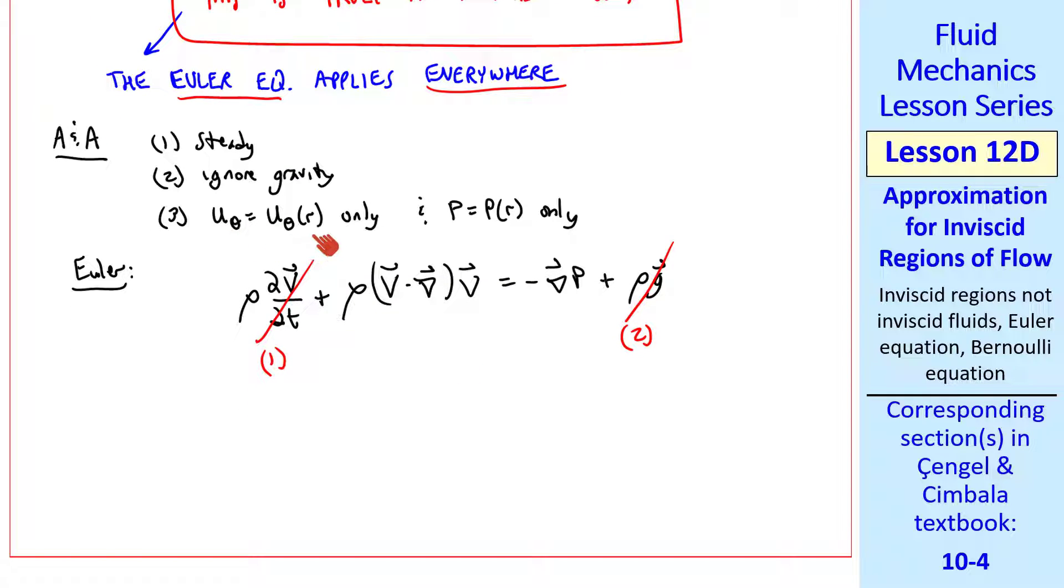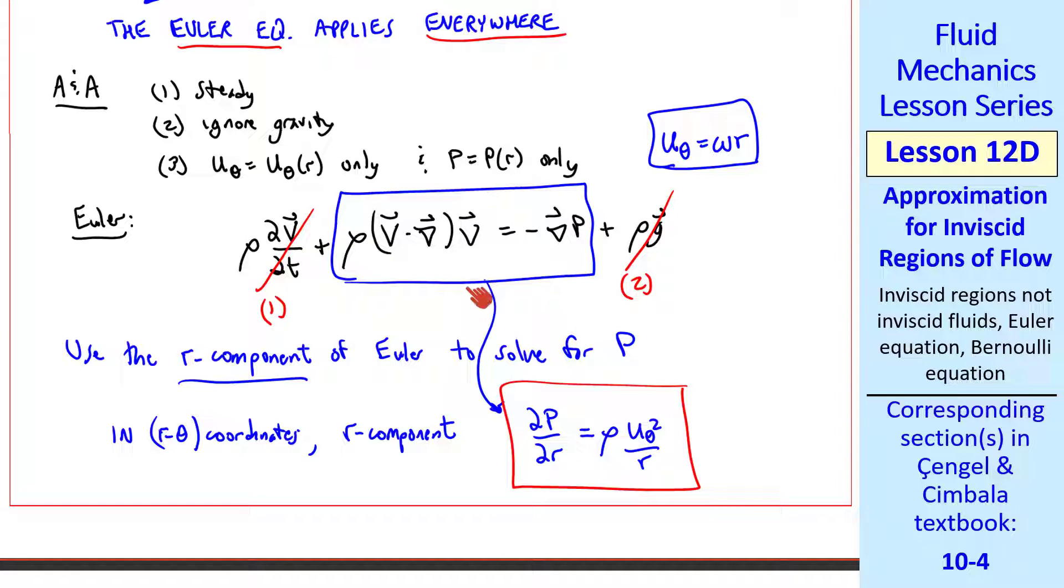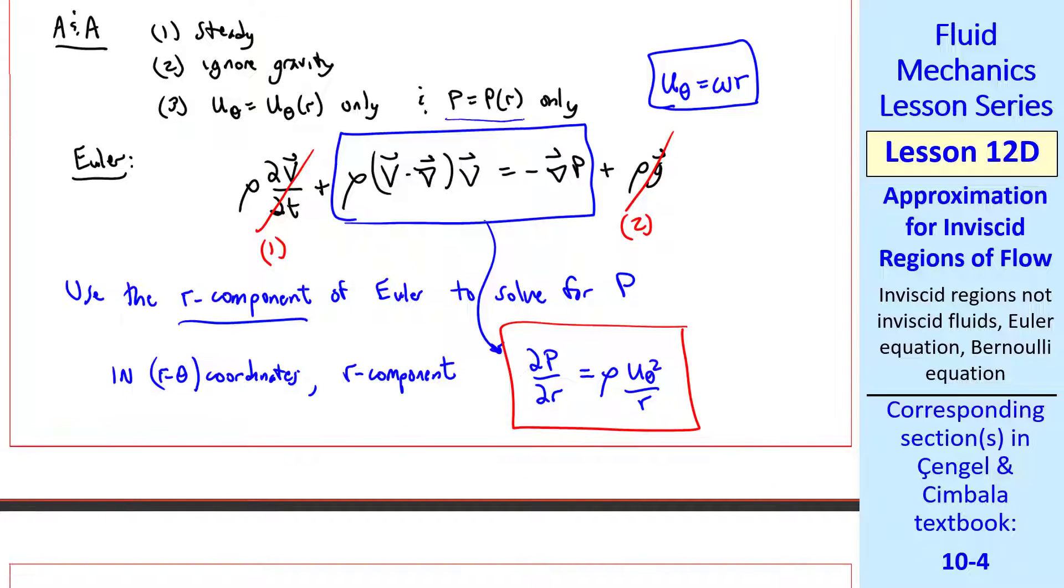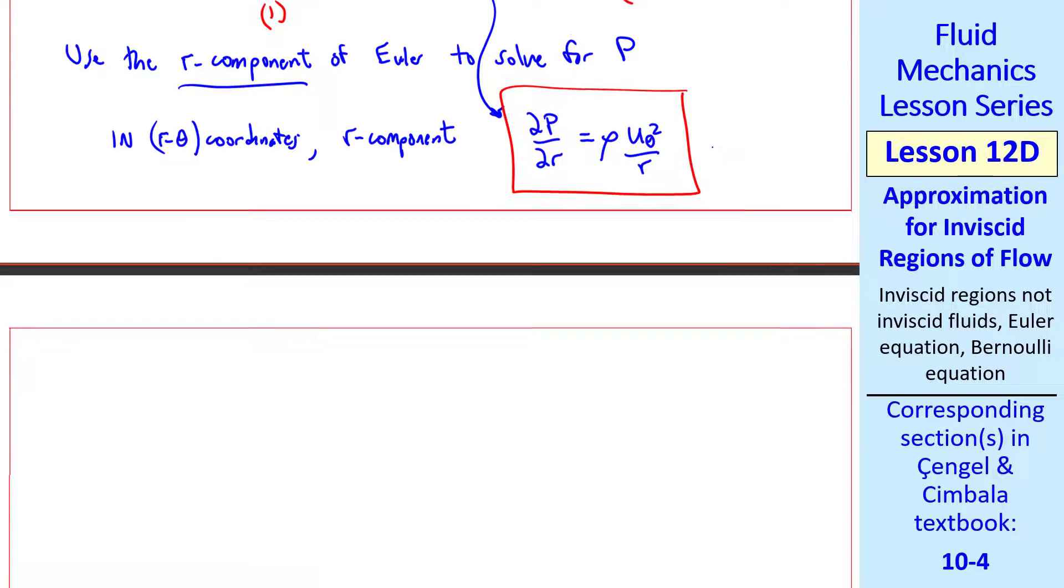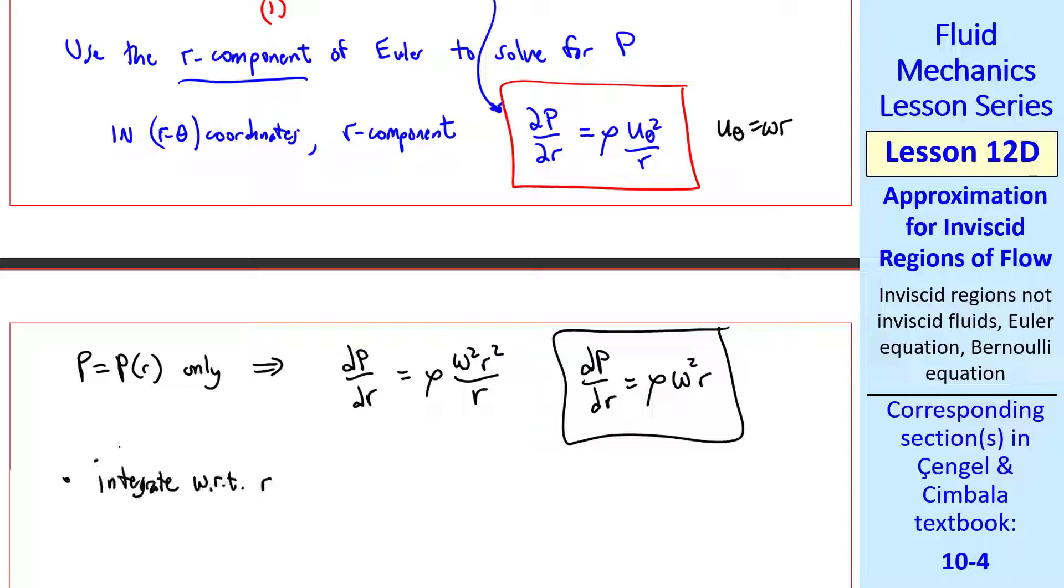In this problem, we know u theta, so we don't need to solve for it. And we'll actually use the r component of the Euler equation to solve for pressure. In cylindrical r theta coordinates, the r component of this equation reduces to del p del r equal rho u theta squared over r. The viewer can show this by writing out these terms in cylindrical coordinates and applying these approximations and assumptions. But notice that p is a function of r only, and thus we can rewrite this using total derivatives. And u theta is omega r, so dp dr simplifies to rho omega squared r.